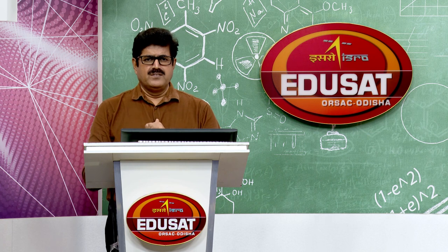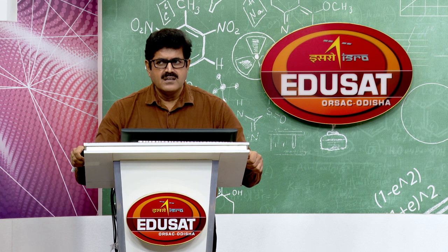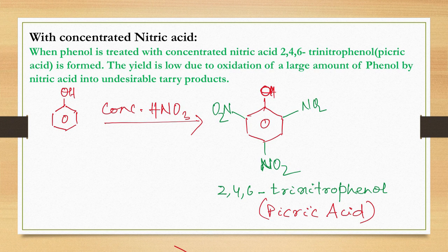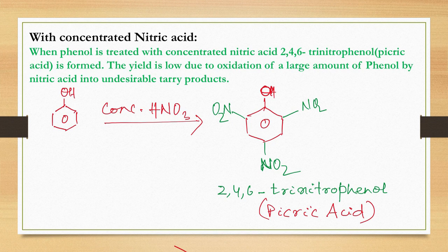With concentrated HNO₃, phenol gives 2,4,6-trinitrophenol (picric acid) — no H₂SO₄ required, unlike benzene. Yield is low due to oxidation by HNO₃. Picric acid (2,4,6-trinitrophenol) is a yellow color dye. If asked what happens when phenol is treated with concentrated HNO₃, the answer is picric acid.